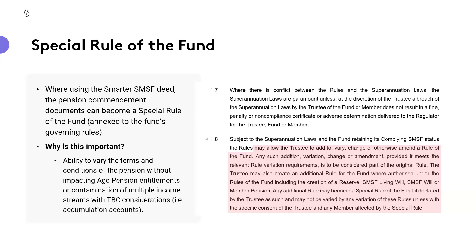This is important because there may be situations where changes to the income stream would require a commutation — a rollback and then recommencement. If you have accumulation benefits sitting within it, or a client in excess of their transfer balance account, you might contaminate some pension information — the tax-free and taxable component — with other monies in the accumulation account. That also has an impact on clients in receipt of the Commonwealth Senior Health Card or age pension, especially if those pensions predate 1 January 2015.